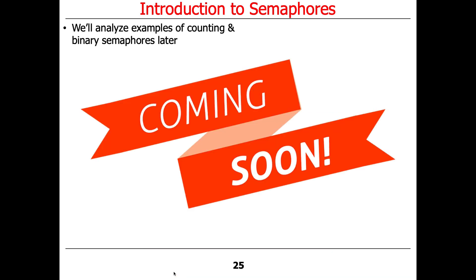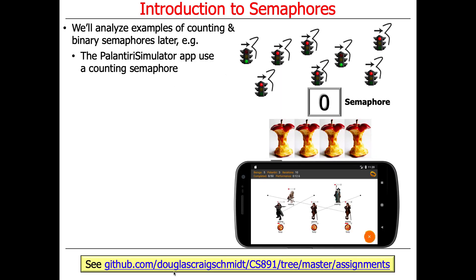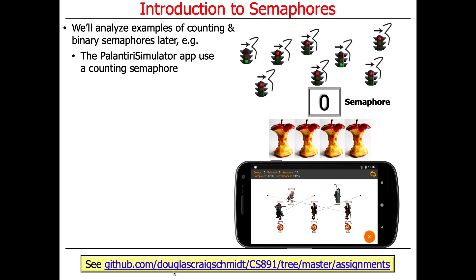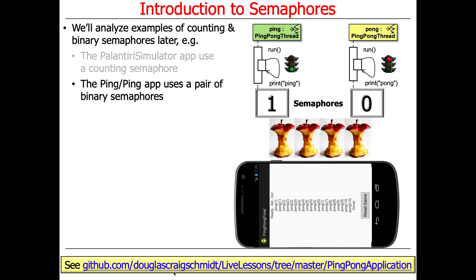We're going to show examples of both counting and binary semaphores. The Palantiri simulator app uses a counting semaphore, where the count indicates how many Palantiri are available — so with a count of four, you can have up to four active threads. There's also another app called the Ping Pong app, which is an example of binary semaphores used in a slightly different way. The Palantiri app uses counting semaphores in a fully bracketed way to ensure only N threads are active on N Palantiri at any given time. The Ping Pong app uses binary semaphores to coordinate threads taking turns doing ping and pong.